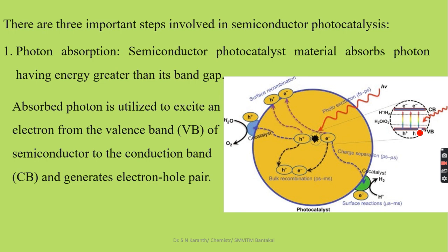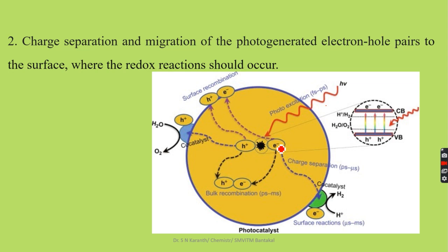When a photon of light hits on these semiconductor materials, the photon is absorbed by the electrons, and those electrons move from the valence band (VB) to the conduction band (CB), generating electron-hole pairs — that is, holes in the valence band and electrons in the conduction band. In the first step, photons are absorbed by the electrons of the semiconductor material, creating electron-hole pairs.